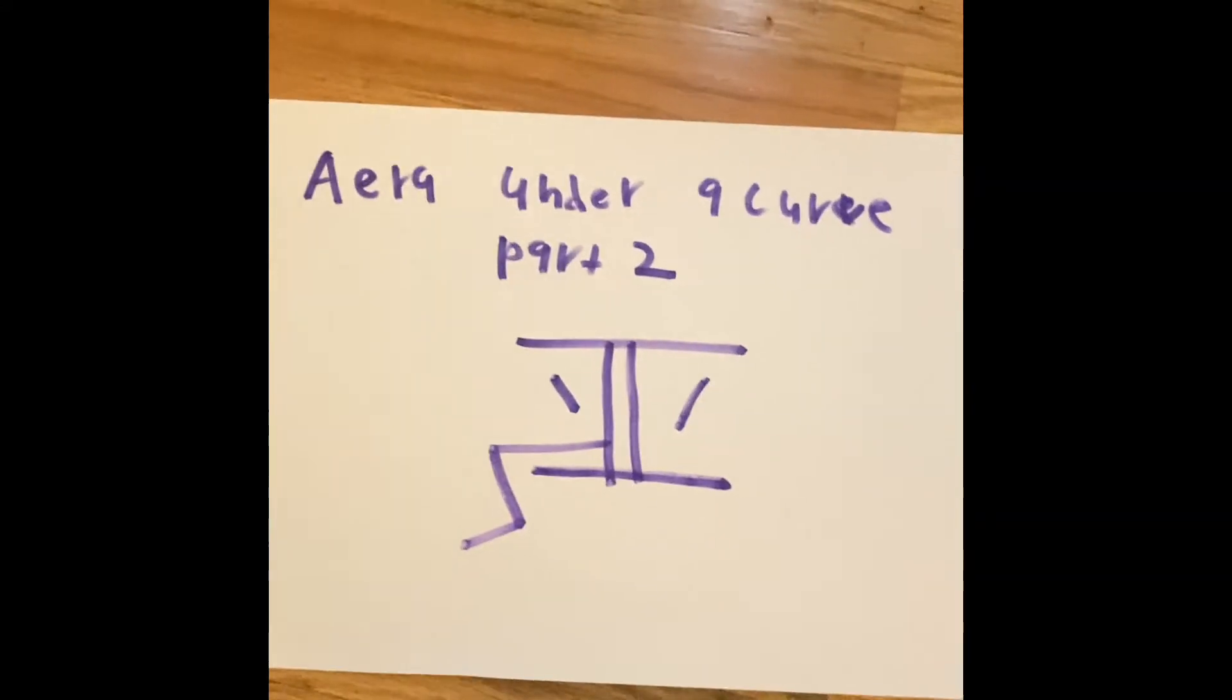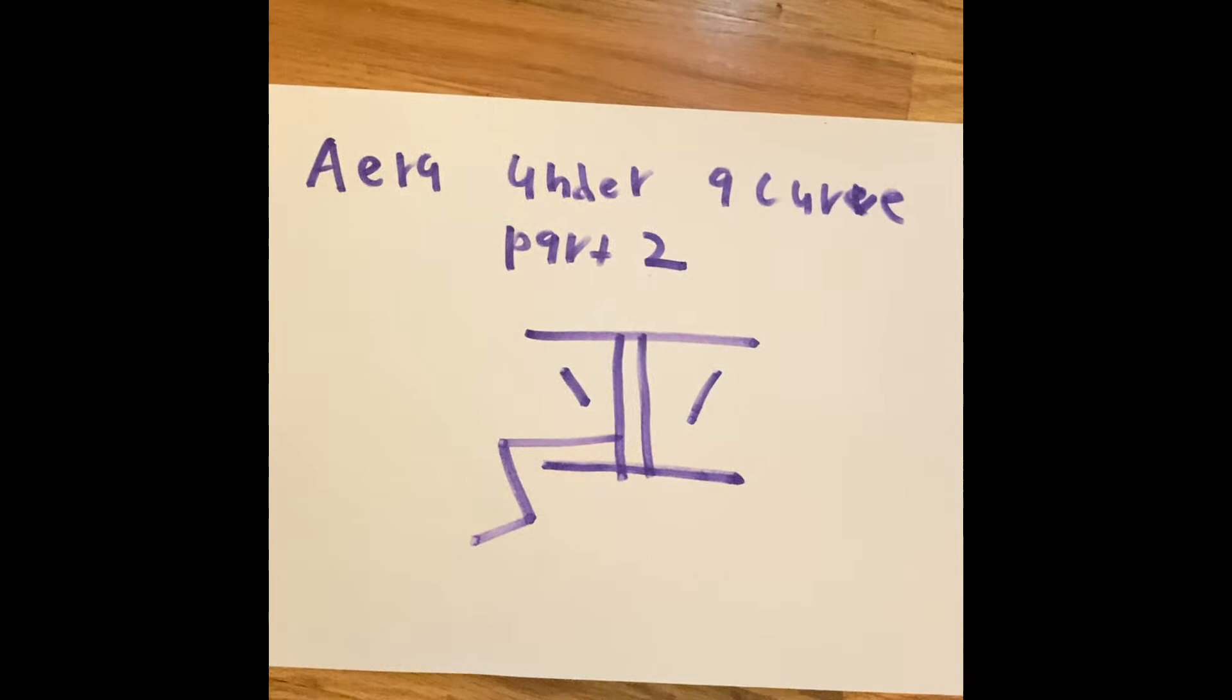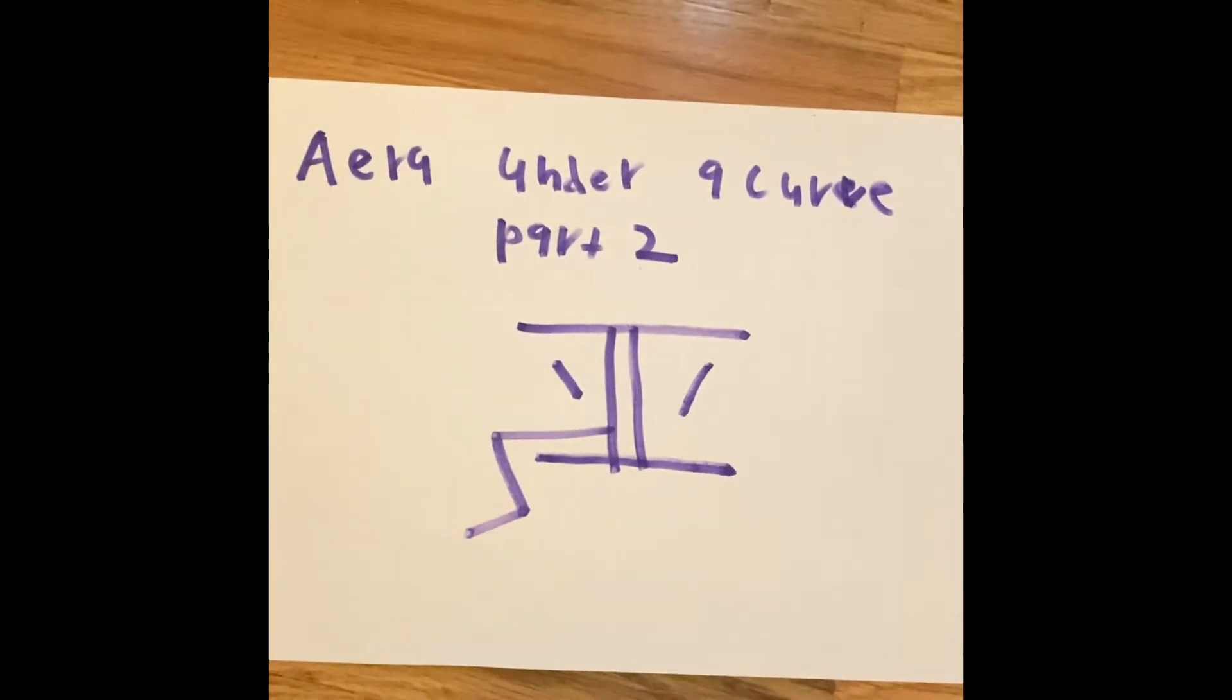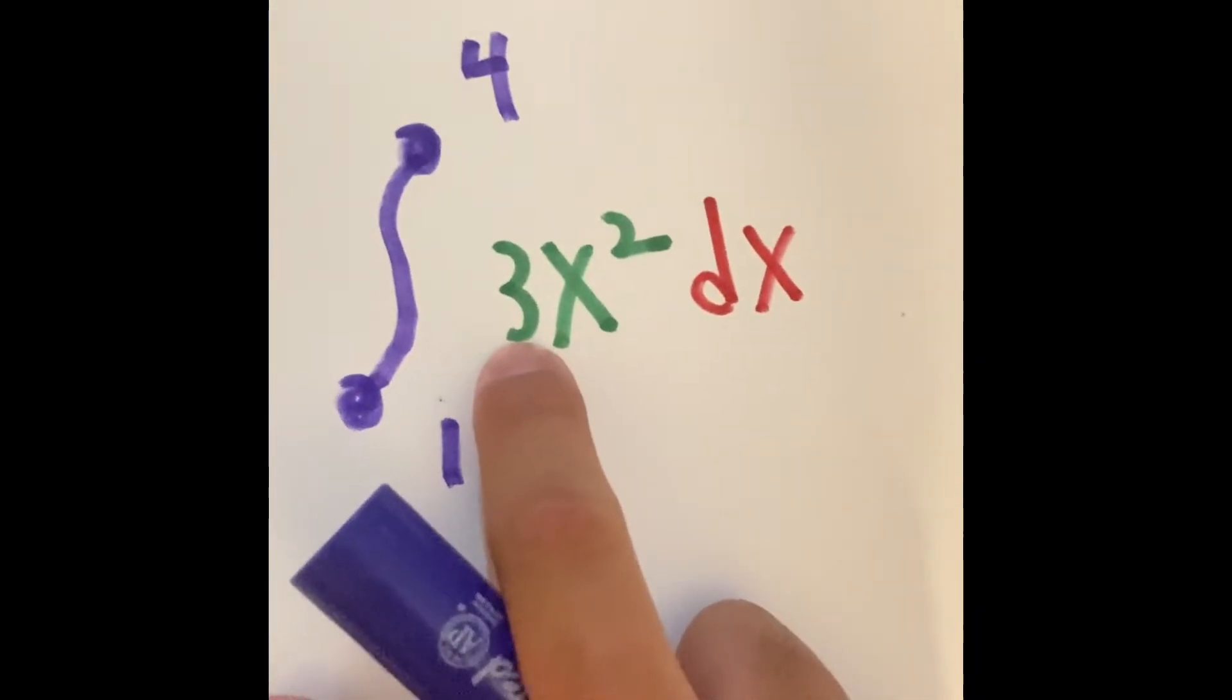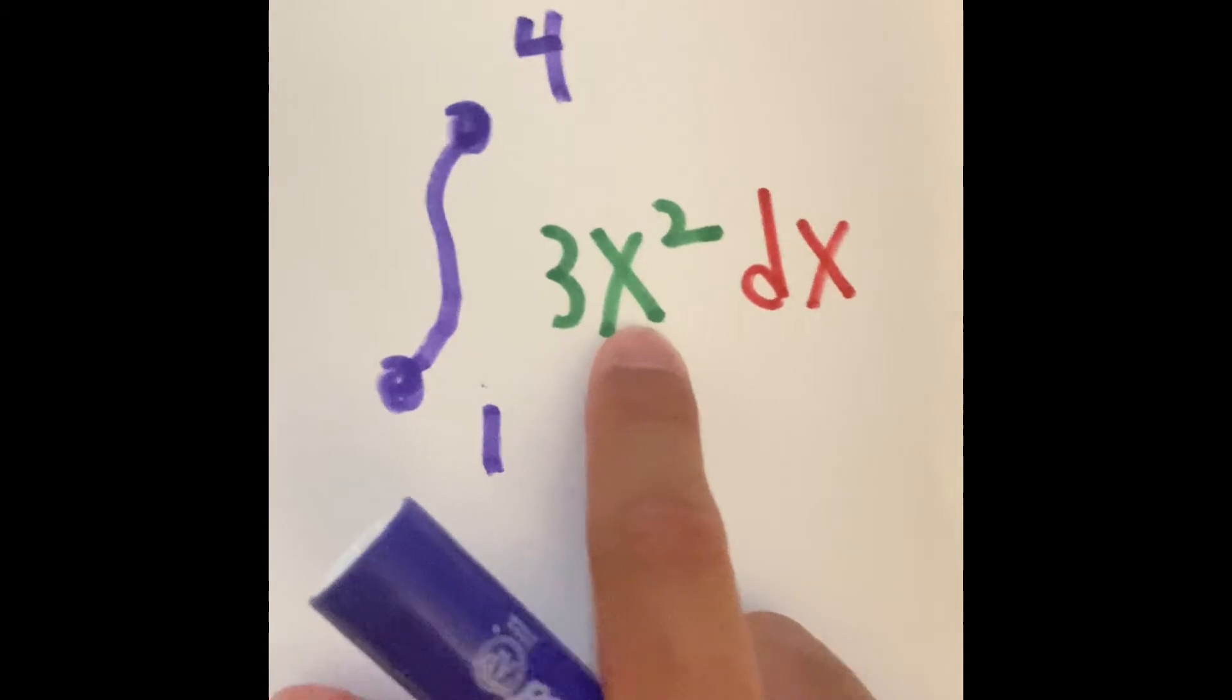This is part 2, but this time we're gonna solve similar problems as the last episode, but this time we changed it by having a coefficient in front of the variable.